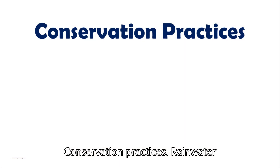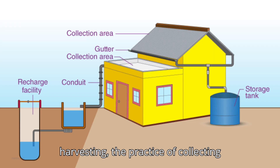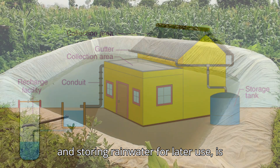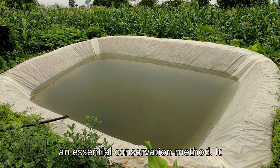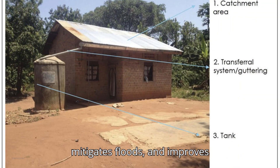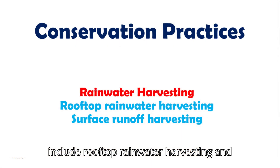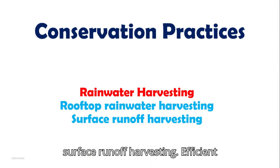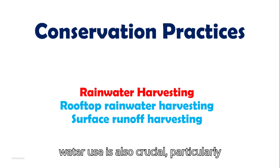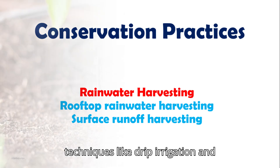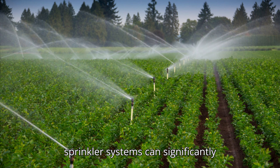Rainwater harvesting — the practice of collecting and storing rainwater for later use — is an essential conservation method. It reduces dependency on groundwater, mitigates floods, and improves groundwater recharge. Common methods include rooftop rainwater harvesting and surface runoff harvesting. Efficient water use is also crucial, particularly in agriculture, where techniques like drip irrigation and sprinkler systems can significantly reduce water consumption.